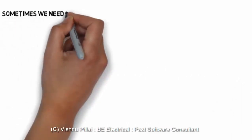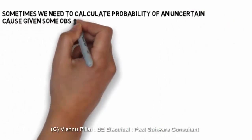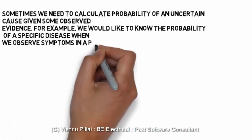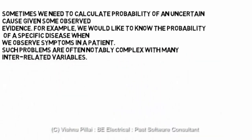In this lecture we will look into the Bayesian network. Sometimes we need to calculate probability of uncertain causes given observed evidence. For example, we would like to know the probability of a specific disease when we observe symptoms in a patient. Such problems are often notably complex with many interrelated variables.